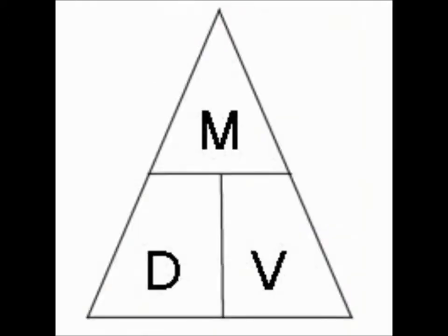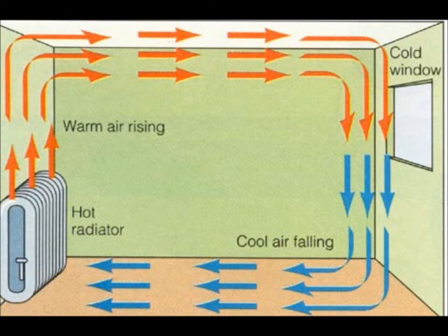We all know the density pyramid d equals m over v, so when volume increases with the same mass of particles, the density decreases because volume is in the denominator.